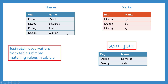Let's move on to semi join. What semi join does is it does not actually perform a merge — it just retains the observations from table one if they have matching values in table two. So 1002 and 1003 do have a matching value in table two, but the result of semi join is that it does not give you the merged data — it just retains those values from the first table and drops the rest.